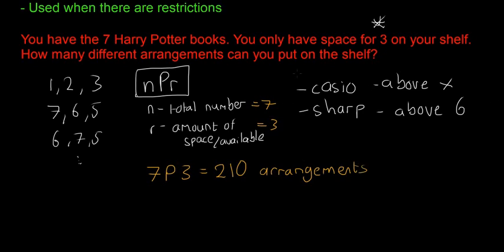That's the sort of restriction you're going to get. You can see that the number is a lot smaller than the 5040 when you have space for all seven books—that's what happens with permutations. There are going to be fewer different arrangements you can have.